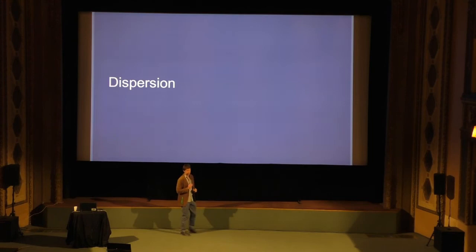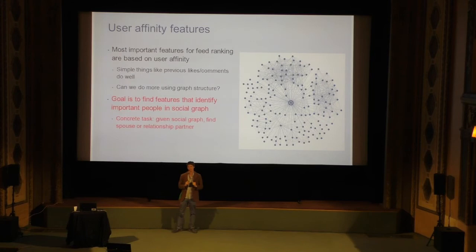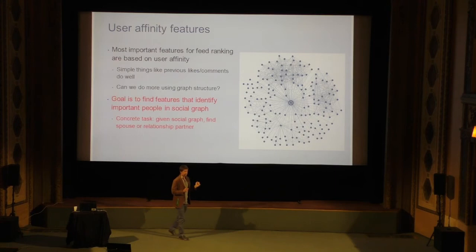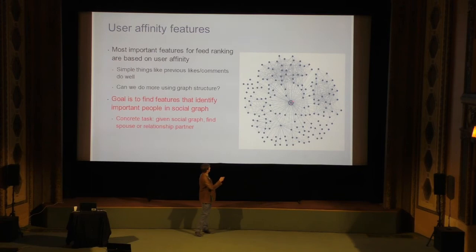I want to spend the last few minutes talking about a specific feature we built called dispersion. Understanding graph structure is one of the most important things we do, and we wanted to ask: how well can we do if all we use is the graph structure — just nodes and edges? We framed this as a concrete classification task. There are many pairs of people in relationships — engaged, married, etc. — which is a good proxy for important people. Given the graph of me at the center with all my friends and their connections, can we identify who my relationship partner is?